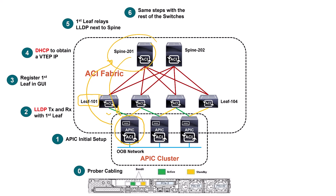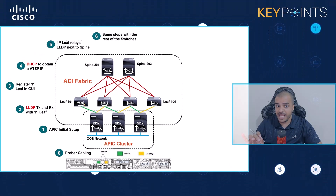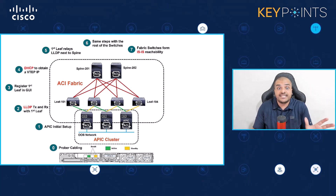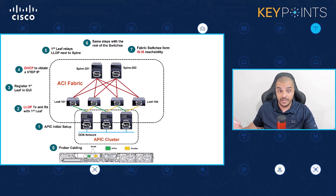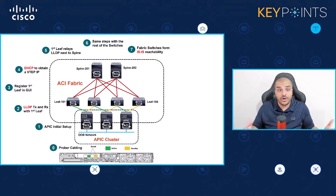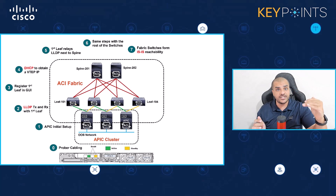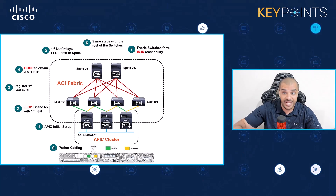Once every switch in the fabric has an IP address, they become Layer 3 neighbors using the ISIS routing protocol — this is the default and only option, and it happens automatically. ISIS gets established between all switches. So while the first six steps focused on the APIC discovering switches, in step seven the switches discover one another via ISIS reachability.